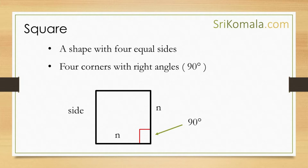First of all, let us discuss what a square is. A square is a shape with 4 equal sides and 4 corners that are all right angles, or 90 degrees. The shape of a square can be seen in the figure shown in this slide.